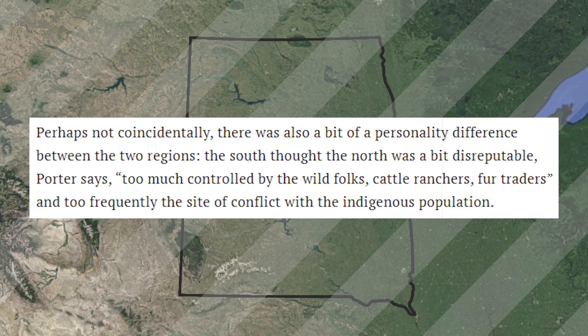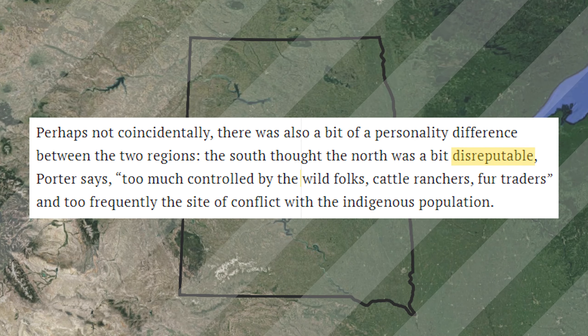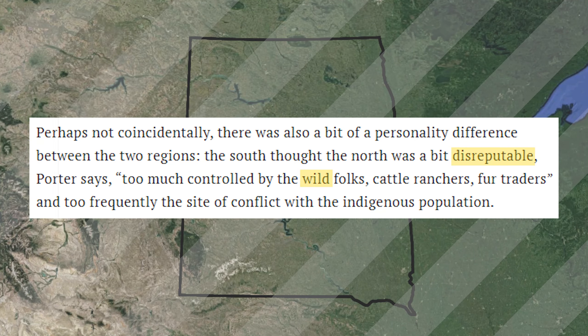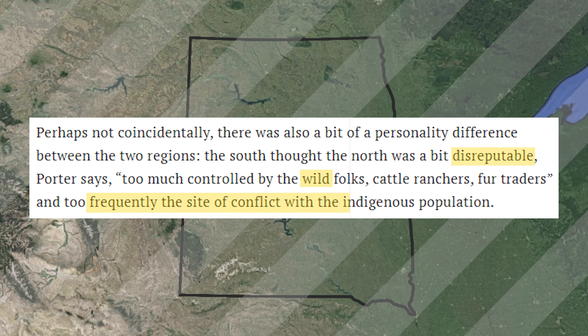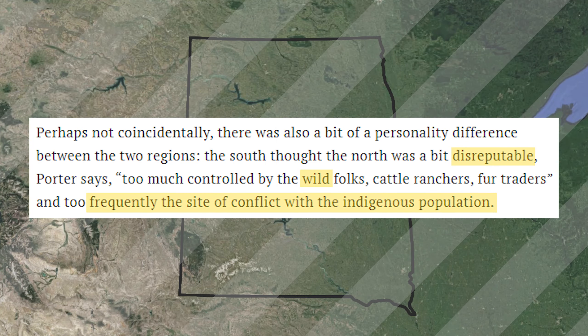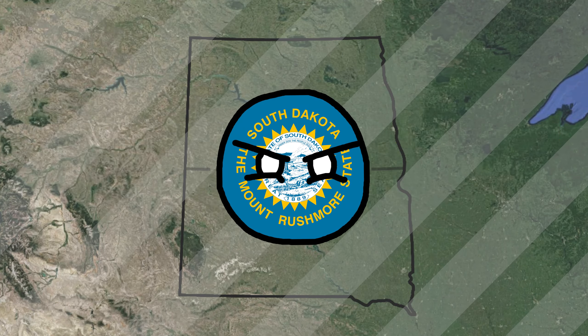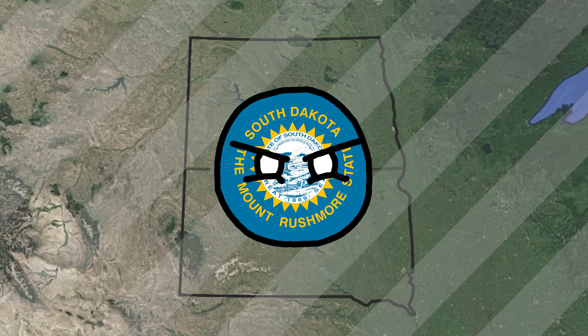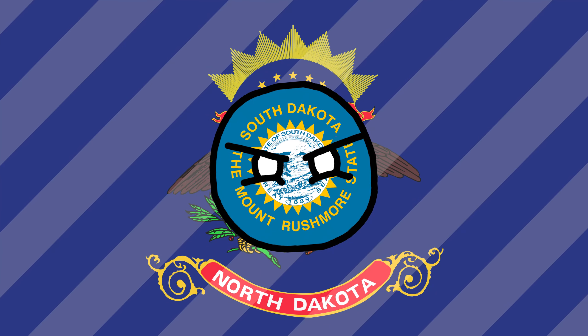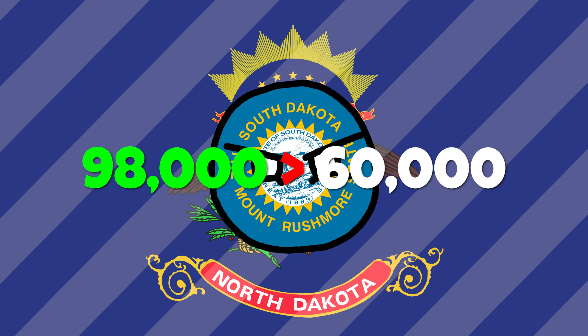Because of this act, many people flocked to the Dakotas, causing their population to boom. Having only under 15,000 people in 1870, but within just 10 years, the population skyrocketed to over 150,000.